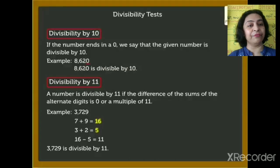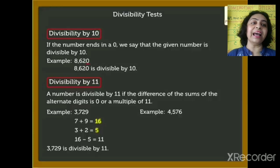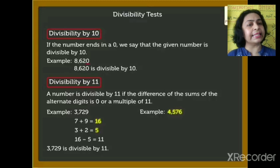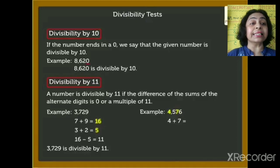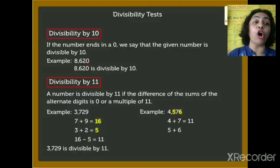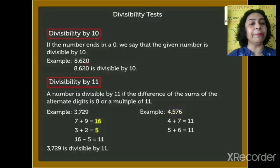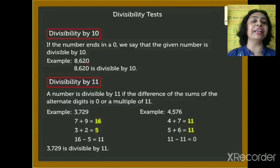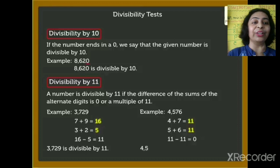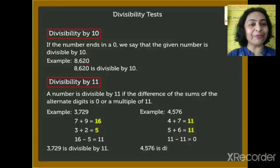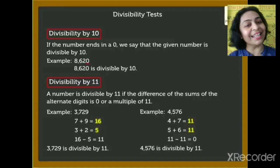Another example for divisibility by 11: 4576. Add digits at odd positions: 4 plus 7 is 11. Add digits at even positions: 5 plus 6 is 11. Subtract: 11 minus 11 is 0. If the difference is 0, the number is also divisible by 11. So 4576 is divisible by 11.